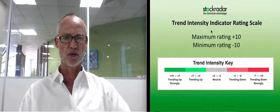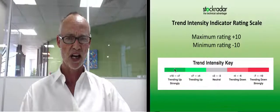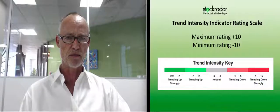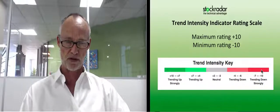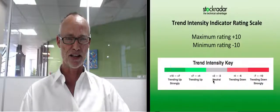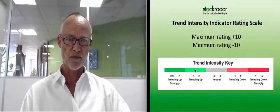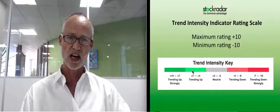Here's the scale. The maximum rating is plus 10, a nice solid green for go. The minimum rating is a nice bright red for stop, hold, or stay out. You can see there are degrees of strength. This is the neutral rating; trending down is below neutral, but trending up qualifies from four upward. The higher area on the scale is far stronger than the lower qualifying range.